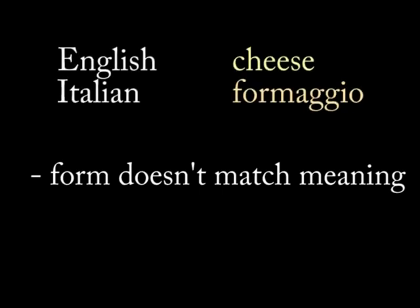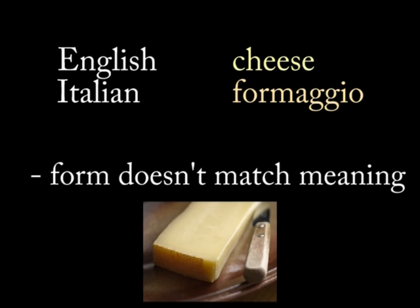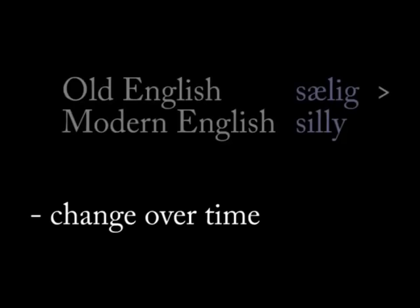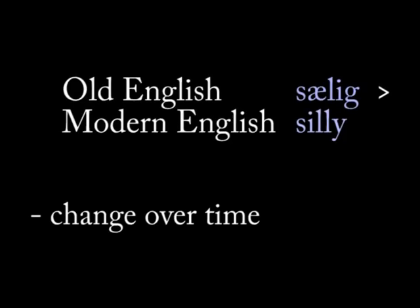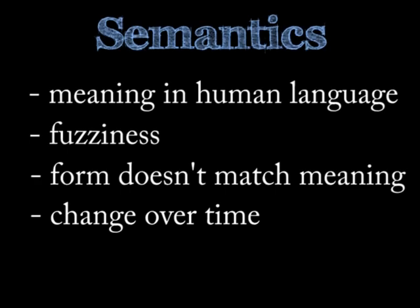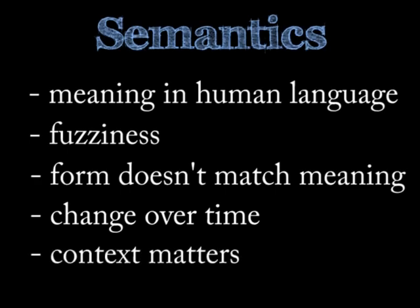The form of a word and the meaning of a word don't match or parallel each other — the relationship between them is mostly arbitrary. There's nothing about the sound or shape of the English word 'cheese,' or for that matter the Italian word for it, that inevitably links them to this meaning. Meaning also changes over time. The Old English word 'selly' meant 'fortunate,' but that word — now pronounced 'silly' — means something quite different.